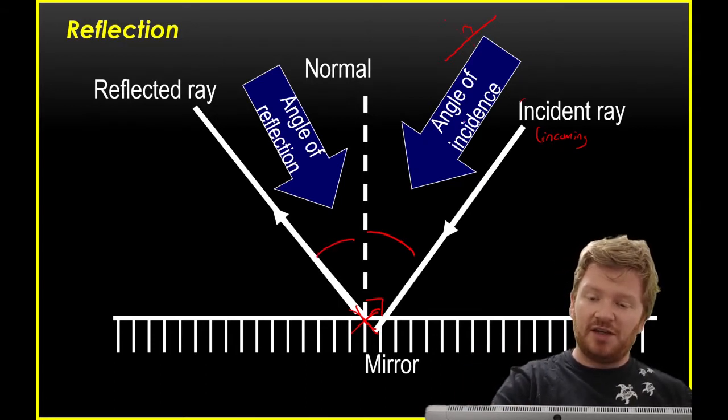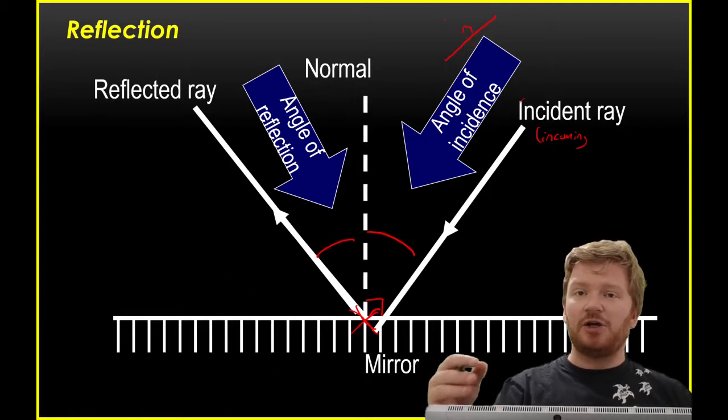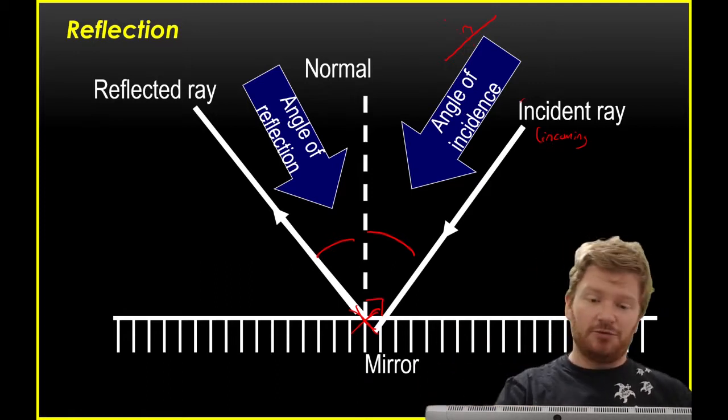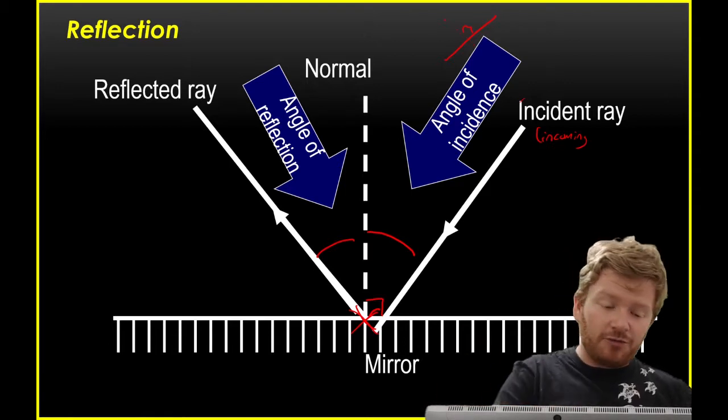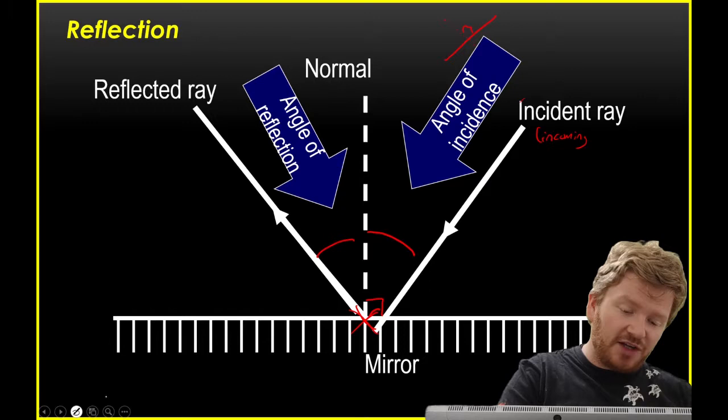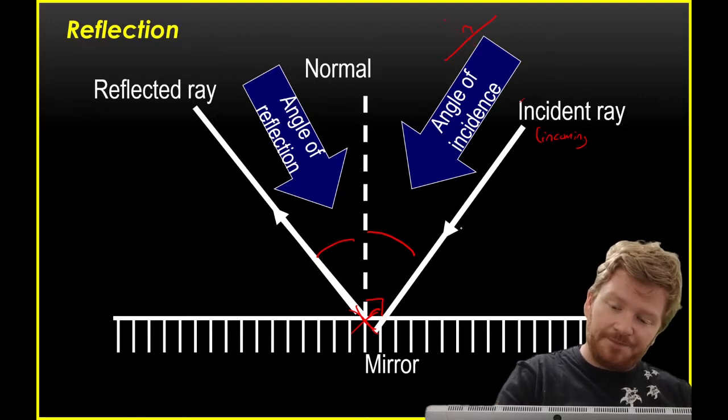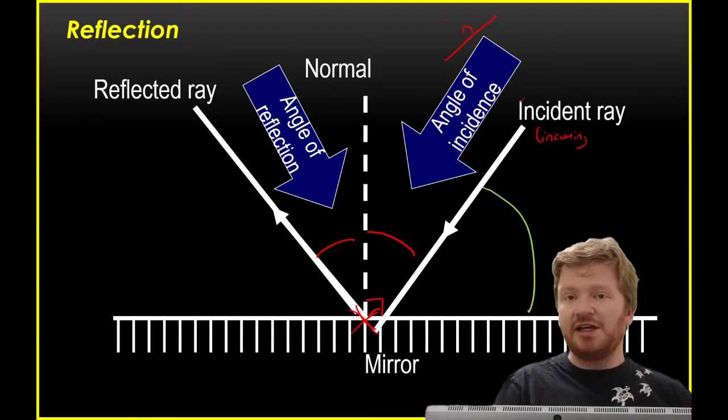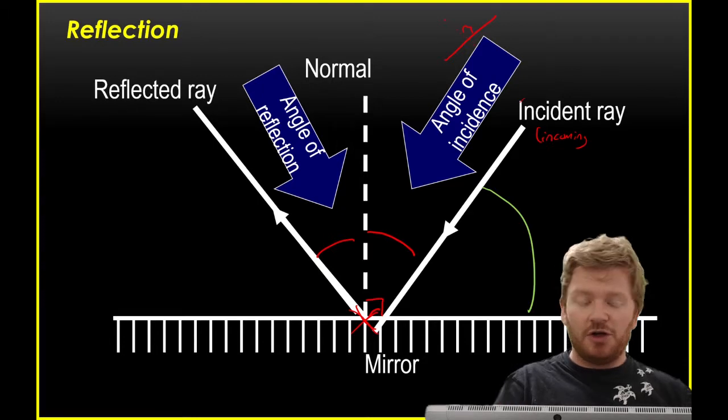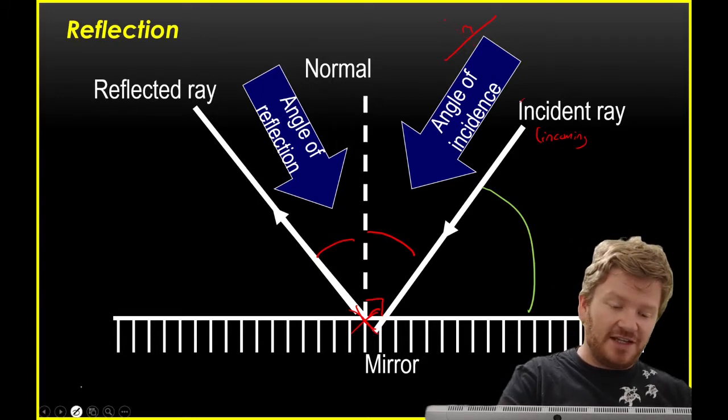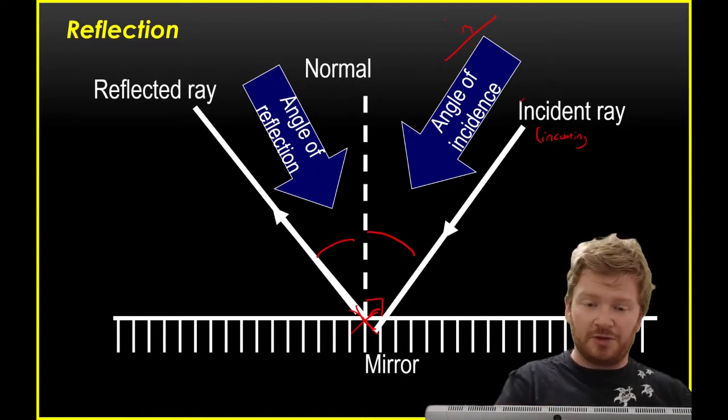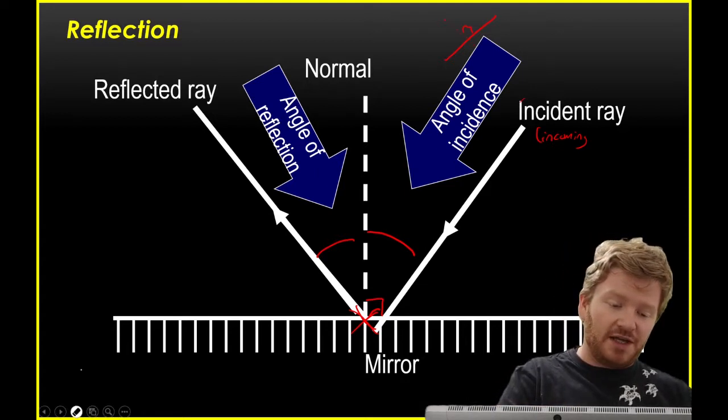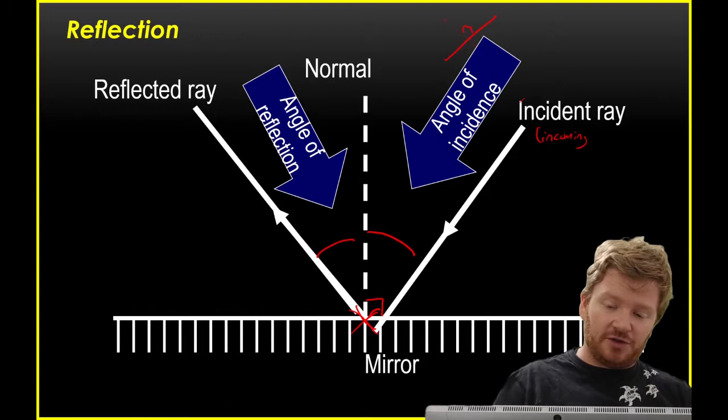So here, the angle of incidence is the angle between the normal and the incident ray. The angle of reflection is the angle between the normal and the reflected ray. A really common mistake that I see students making all the time is to measure this angle here between the ray and the mirror. Do not do that. You will never get marks for it. So always measure between the normal and the ray that you are interested in.